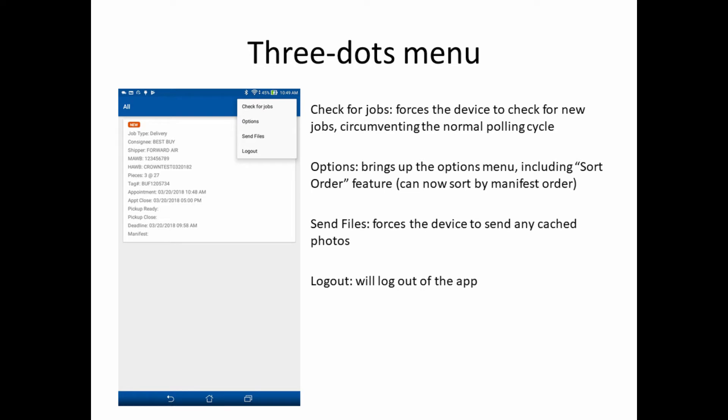Options brings up the Options menu, which includes the ability to sort your shipments in various ways. In Crown Mobile V2, we've added the ability to sort your shipments by manifest order.